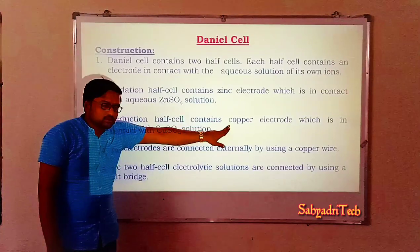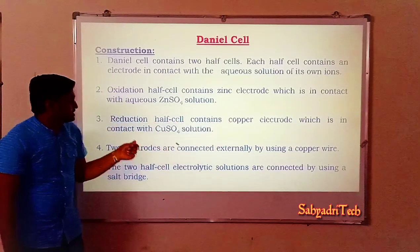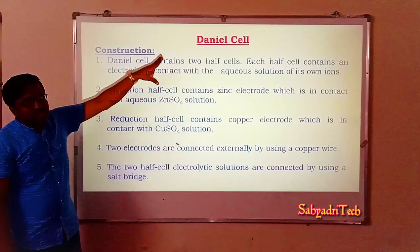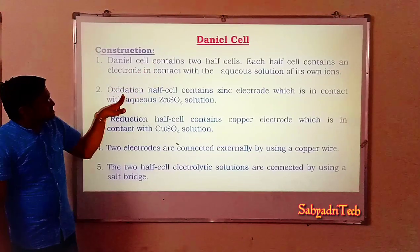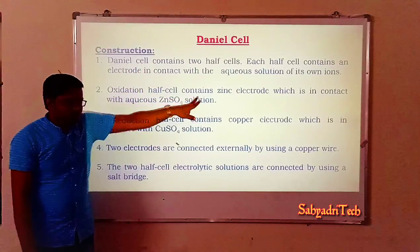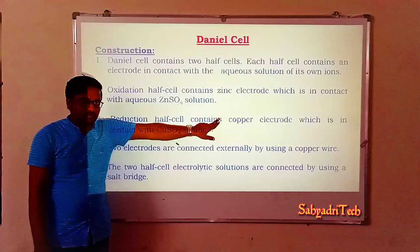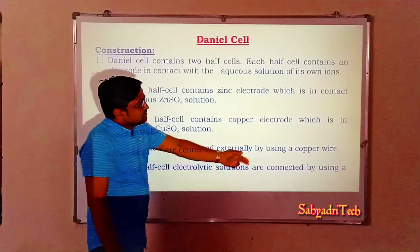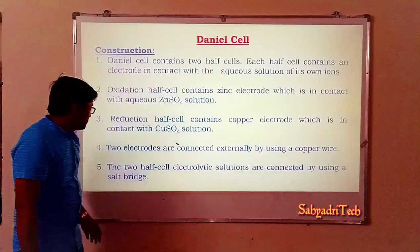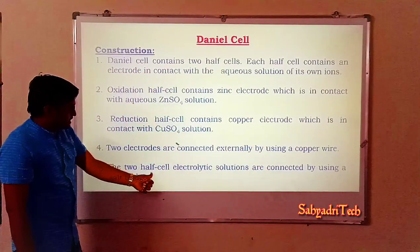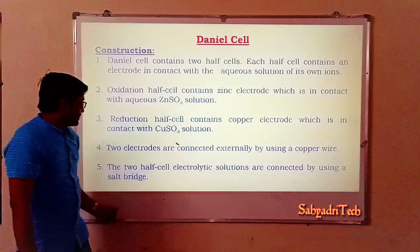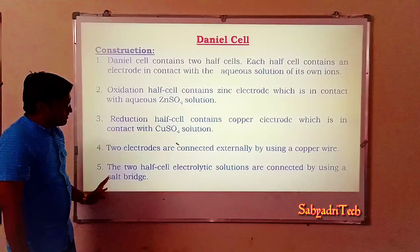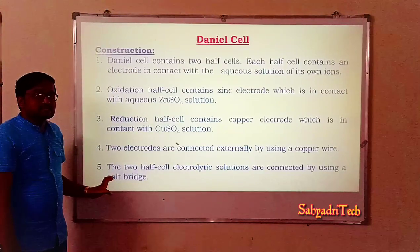The reduction half cell contains a copper electrode in contact with the aqueous copper sulfate solution. Both electrodes are connected externally by using a copper wire to the voltmeter, and the two half-cell electrolytic solutions are connected by using a salt bridge.